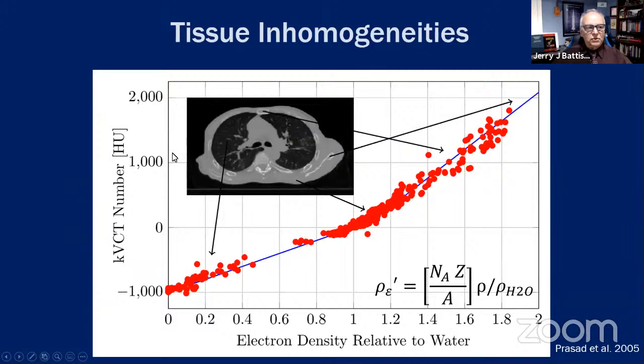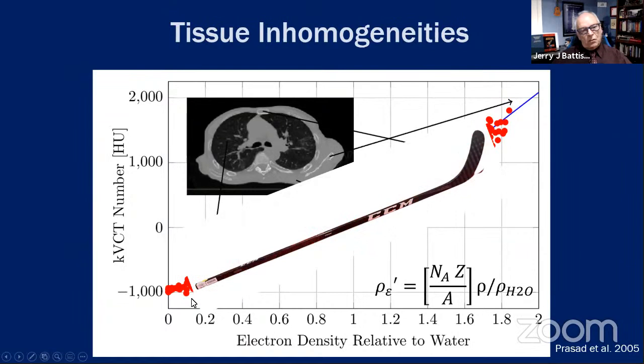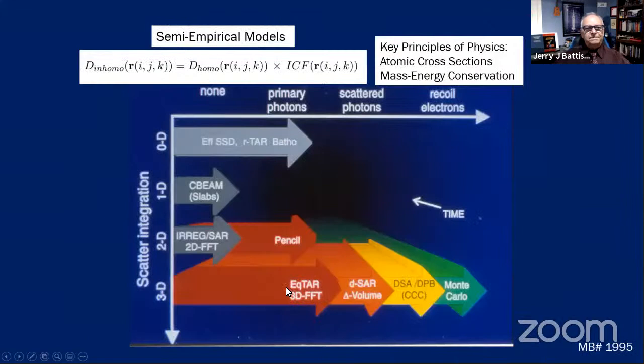With the CT scanner we were able to calibrate electron density in tissue. The equation for relative electron density is electrons per centimeter cubed relative to water. This was confirmed with in-vivo measurements of tissue — not phantom measurements — and as Canadians we curve-fit this to a hockey stick, and it is a beautiful fit.